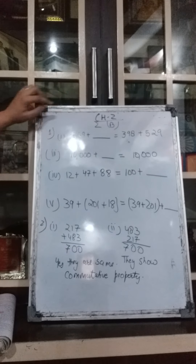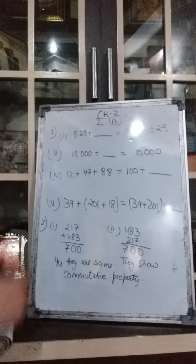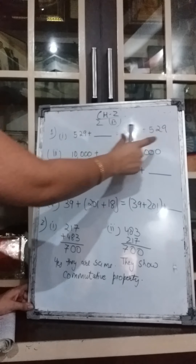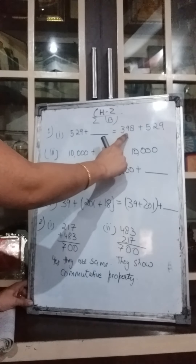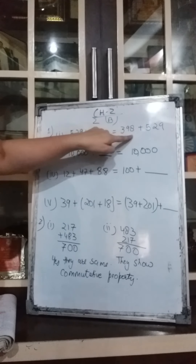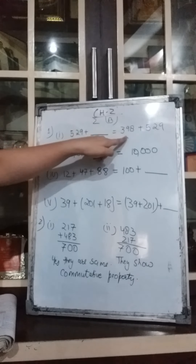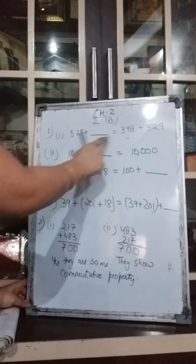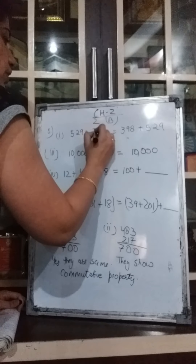We come to exercise 2B, first question, doing parts 1, 3, 4 and 5 in the class copy. We have to fill in the blank so the statement becomes true. First part: 529 plus blank should equal 398 plus 529. You can see 529 appears on both sides, so the missing number is 398. We simply changed the position of the numbers — that is commutative property. The answer is 398.